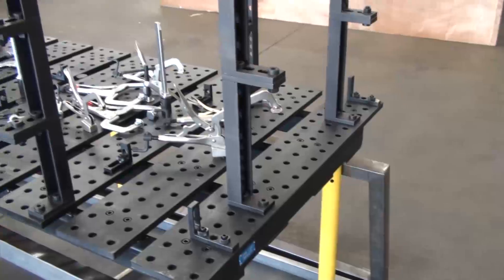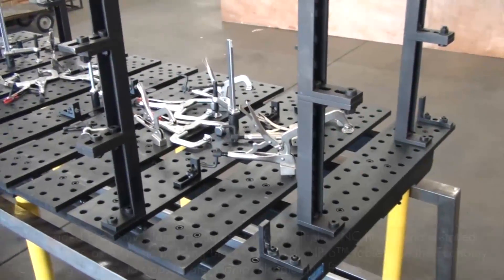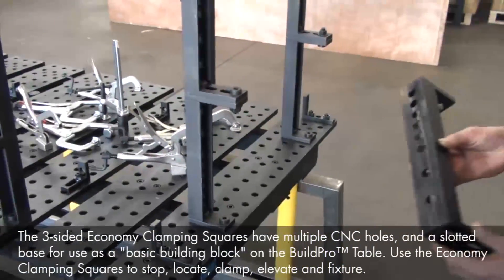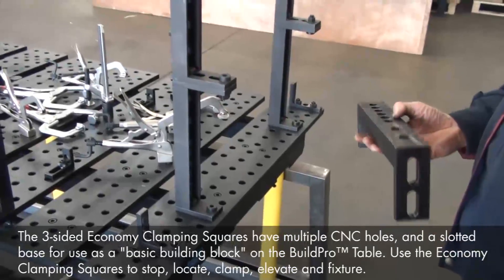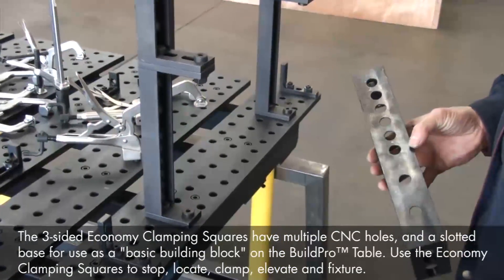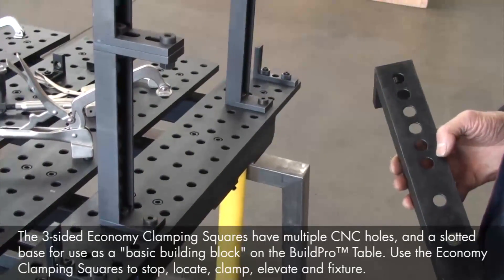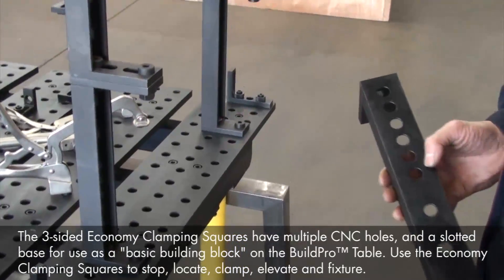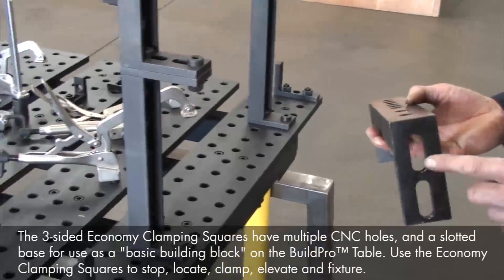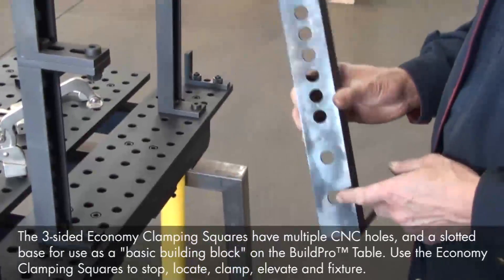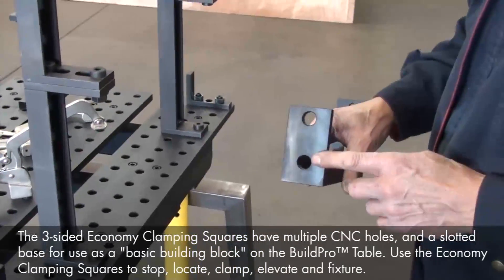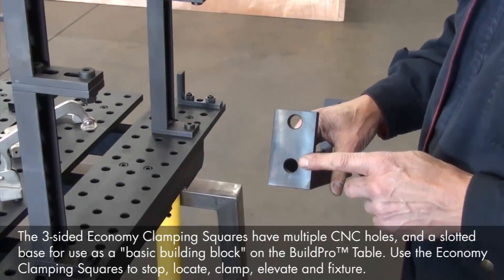To set up our fixture, we're going to start with the Economy clamping squares to set up an accurate right angle for locating our 2-inch bottom tubing. The Economy clamping squares have one base with a slotted surface for adjusting the mounting location, and a second base with CNC machined 5/8 holes for mounting in a fixed location.